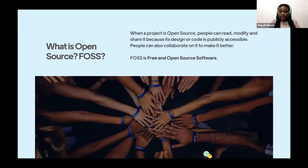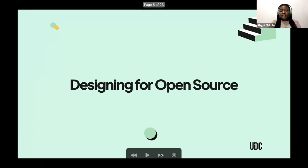So when you have open source software that is both open and free, we call it FOSS — F-O-S-S. It's an acronym. And there are many applications like that we use that are free and open to use. Designing for open source is actually possible.